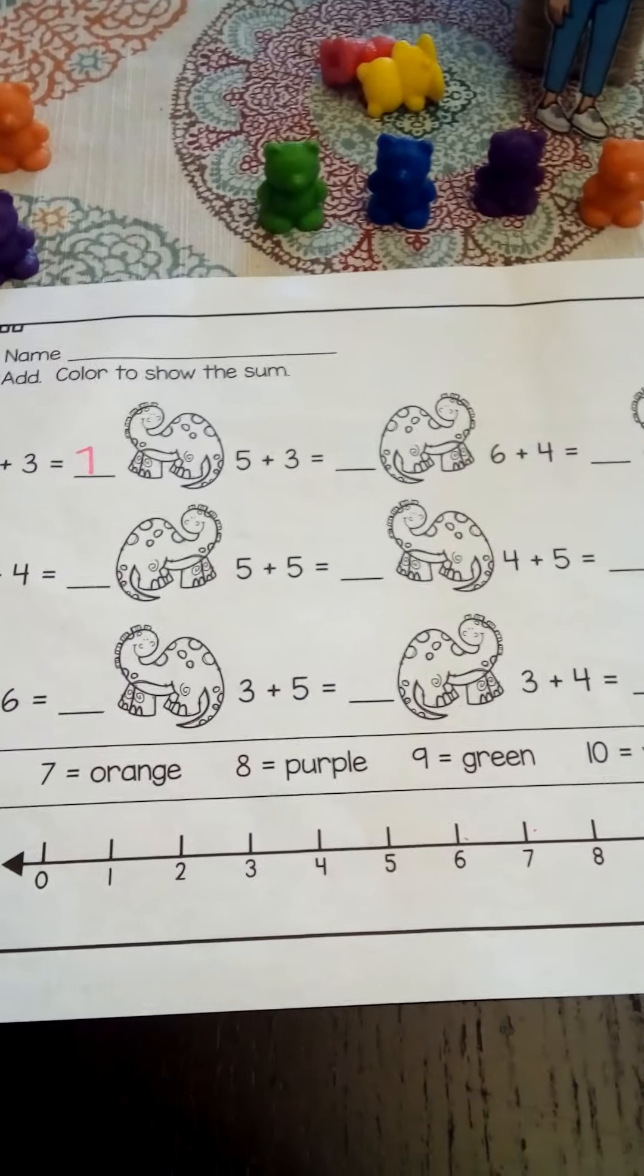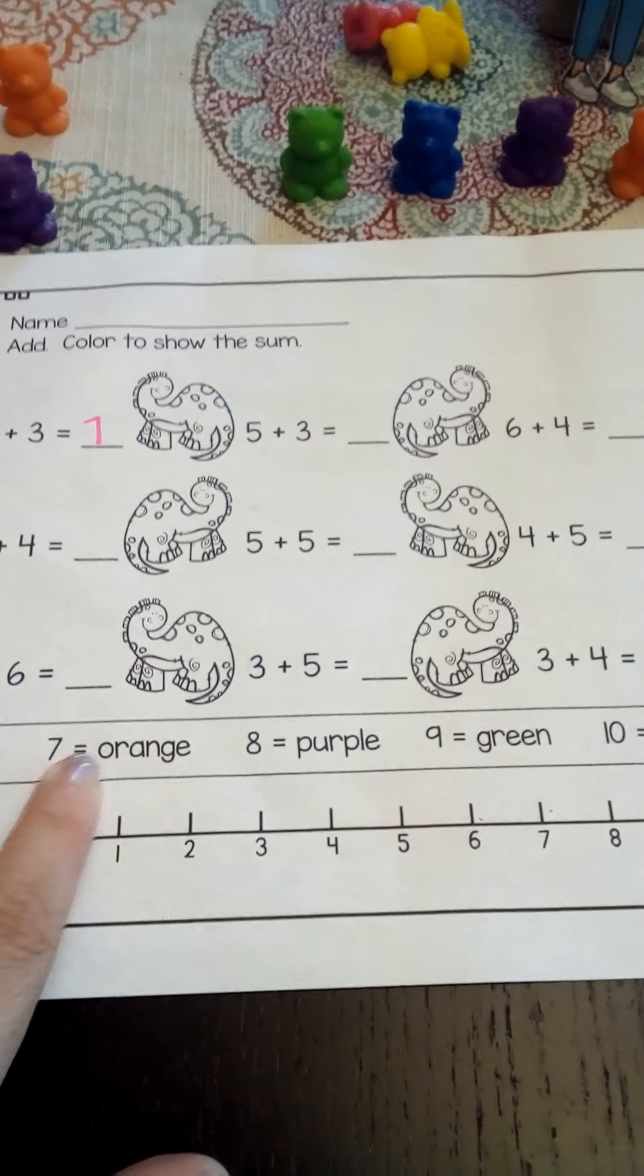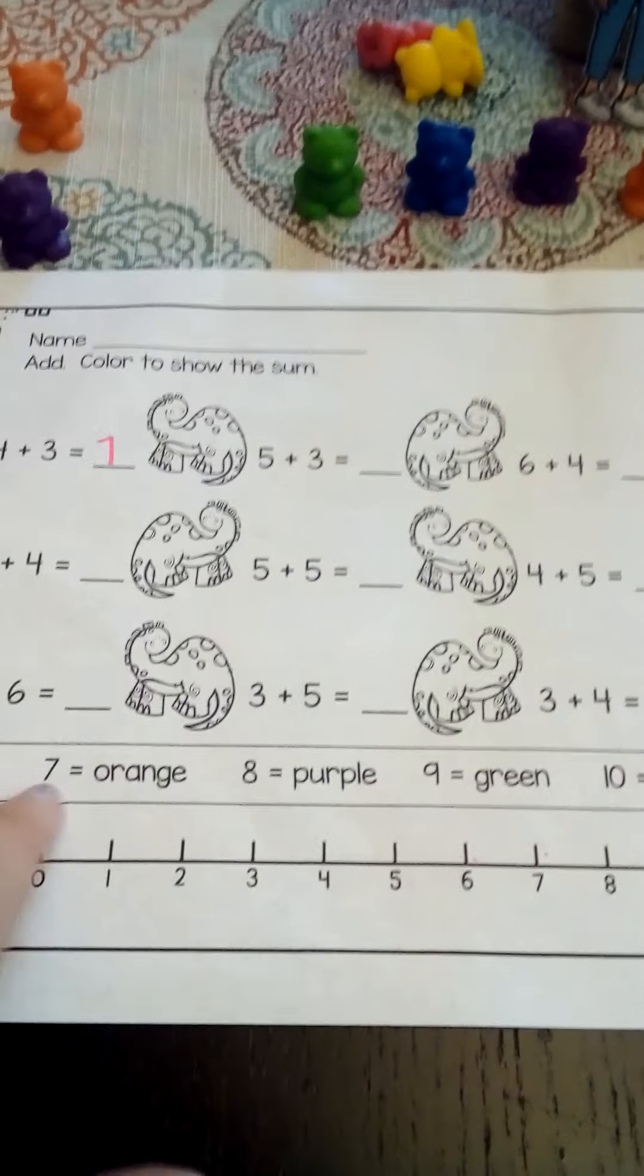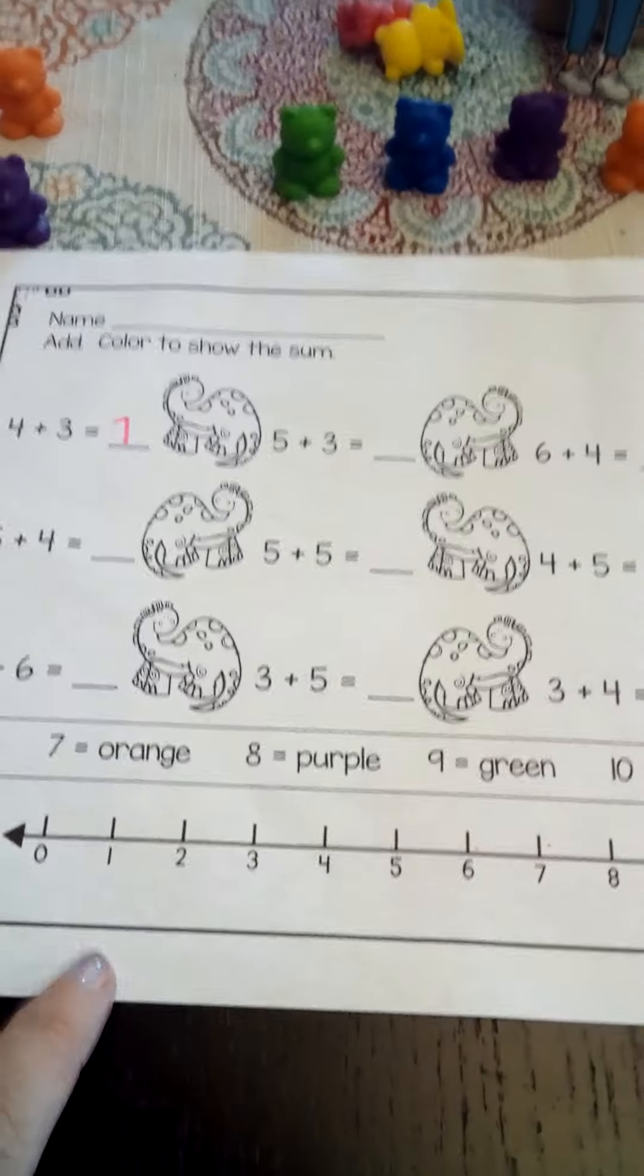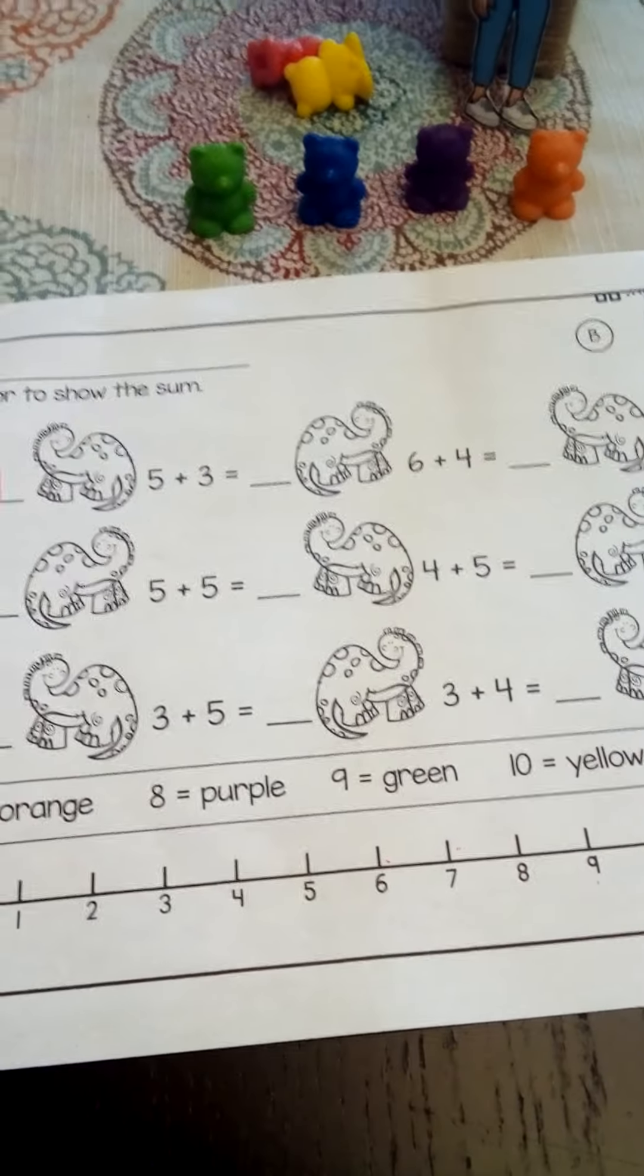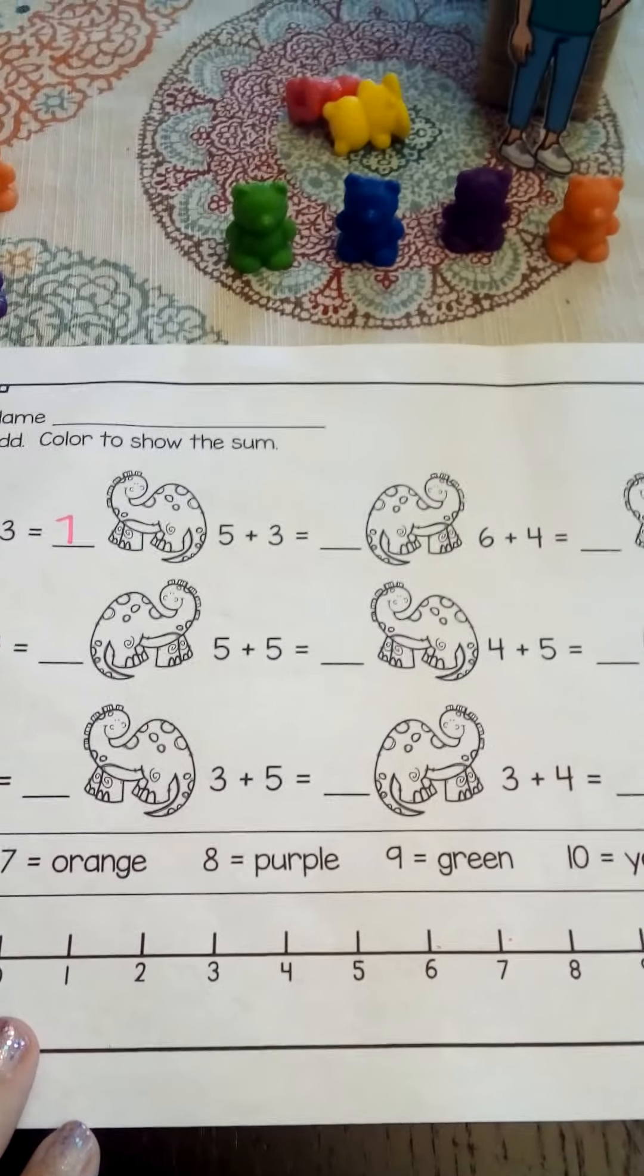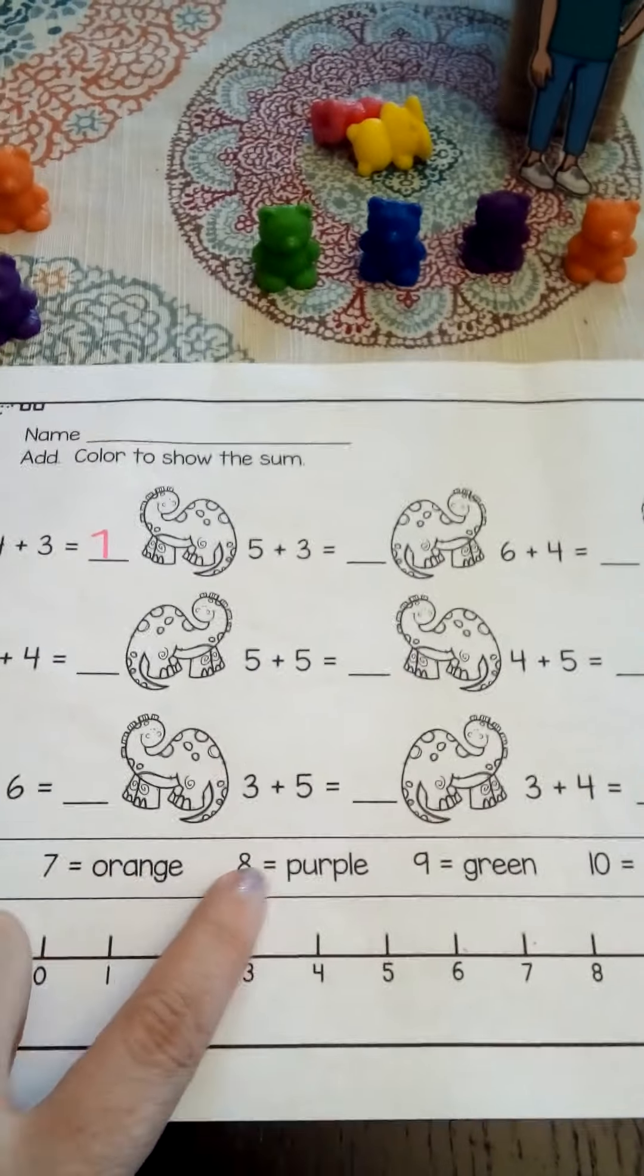So this paper is a little different because the number you get as your total, that has a color with it. So I got seven for this one, right? So that means we're going to color that dinosaur the right color. Just like we do in class when we have the numbers that we color the certain colors. That's what we're doing with this one.